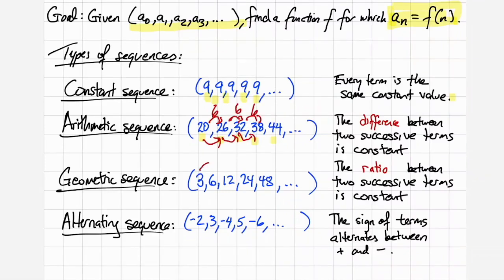Also geometric sequences. In that case it's not the differences that are the same, it's the ratio between two terms that is always constant. So 6 divided by 3 is 2. 12 divided by 6 is 2. 24 divided by 12 is 2. 48 divided by 24 is 2. So this is an example of a geometric sequence where the ratio between two successive terms is constant.